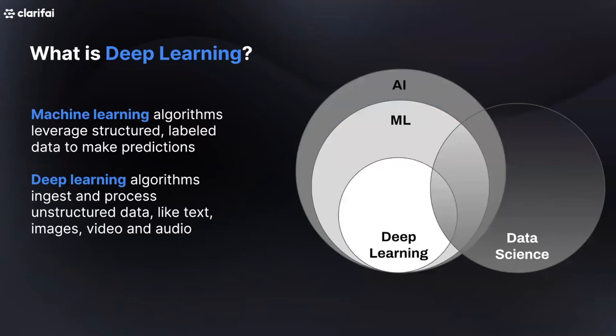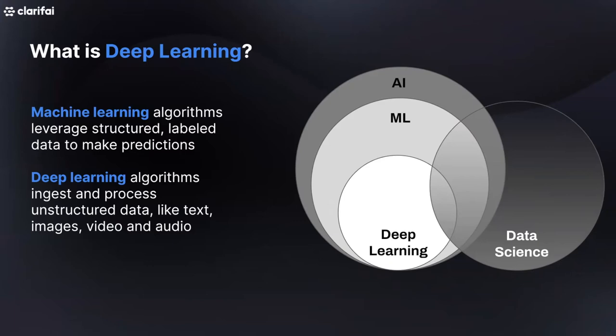Let's level set around what we actually mean by deep learning. On the right you'll see a diagram that talks about AI and the subsets of AI. AI broadly refers to helping machines be intelligent. Machine learning is a specific subset that usually deals with structured data to make predictions. You can think of this as algorithms that can take rows and tables in a database and get insights out of it. For example, you can use a structured data machine learning algorithm to predict the lifetime value of a user, or when you go to a site like Amazon and it shows you the product you're most likely to purchase.